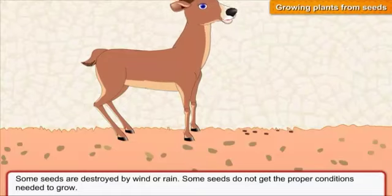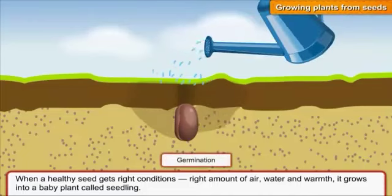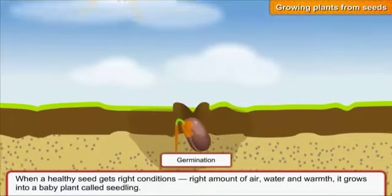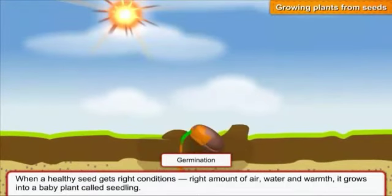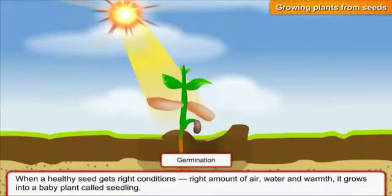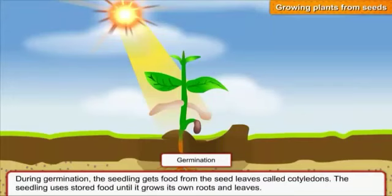Germination: when a healthy seed gets the right conditions — the right amount of water, air, and warmth — it grows into a baby plant called a seedling. The process by which a seed grows into a new plant is called germination.